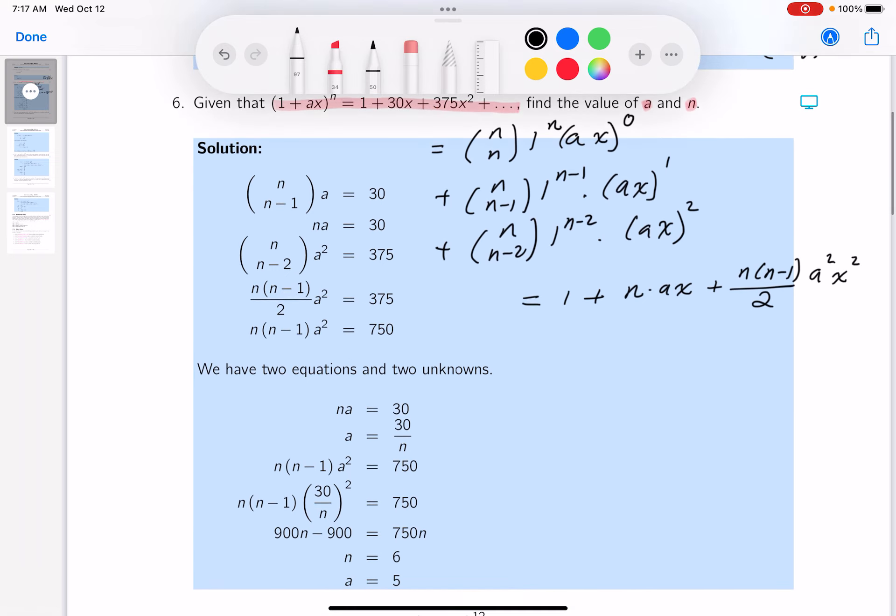What are you going to do now? Well, equate. What are you going to equate? Well, the 1 equals 1. That's not a problem there. Let me point out what I mean by that. This one equals this one. Let's go to the next one. And 30, I'm equating coefficients by the way, is equal to n a. All right, that's pretty simple. And I know that n times n minus 1 times a squared over 2 is equal to 375.